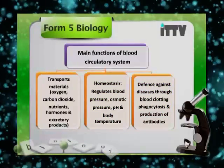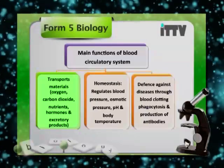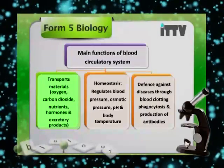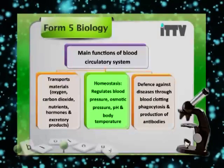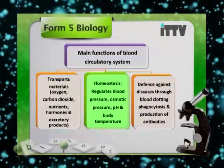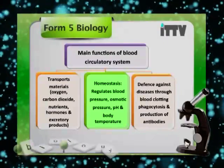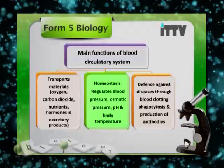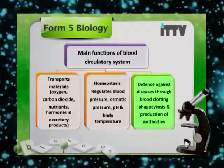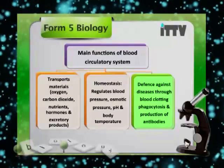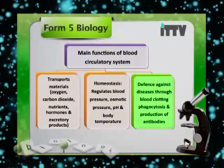The blood circulatory system plays a major role in transporting materials such as oxygen, carbon dioxide, nutrients, hormones, and excretory products. It also plays a major role in homeostasis — balancing the human body. It regulates blood pressure and osmotic pressure through the kidneys, balances the pH within the range of 7.2 to 7.4, and maintains body temperature at around 37 degrees Celsius. The blood circulatory system also plays a very important role in defense against disease via blood clotting, phagocytosis, and production of antibodies.